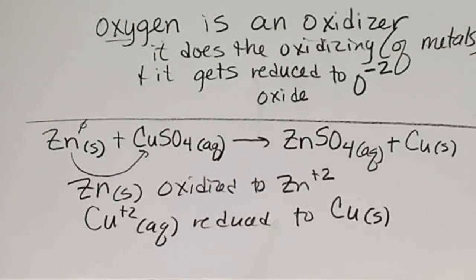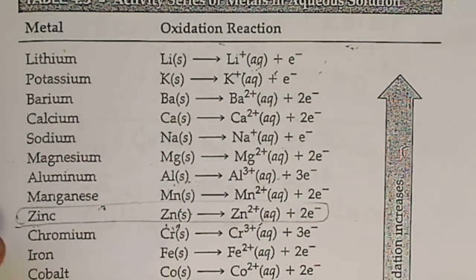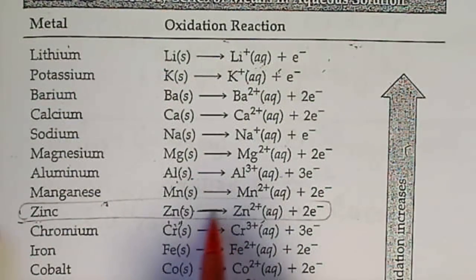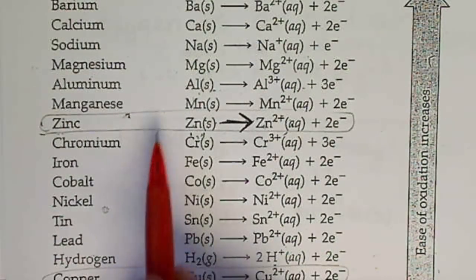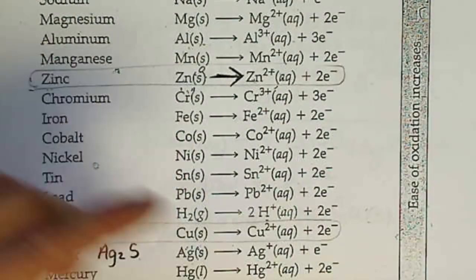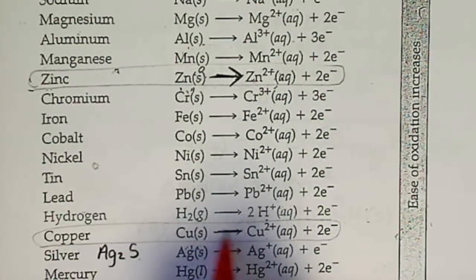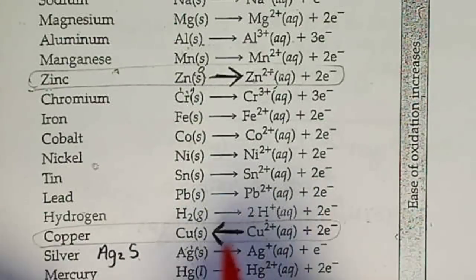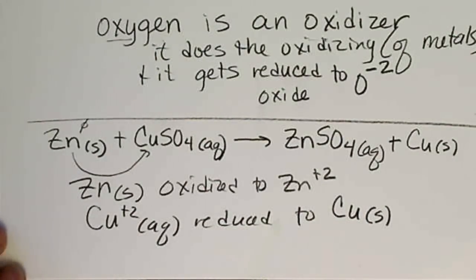We may have been required to predict whether this reaction would occur or not using the activity series. If we recall how to use this, the metal higher on the activity series is going to be oxidized, or the reaction will proceed in this direction. Since zinc is higher than copper on the activity series, then the solid zinc metal that we added to the copper, the zinc metal did get oxidized and go into solution, and the copper, the ion that was in solution, was reduced back down to solid copper. That would be one other type of reaction that would be considered an oxidation reduction reaction.